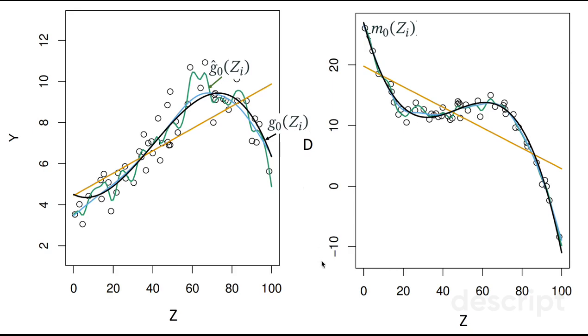What do we mean by data generating process? So, we have y and we have d, and both have some kind of relationship with the nuisance parameters.